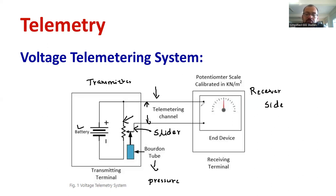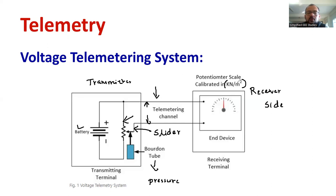What is available at the receiving end side? There is a calibrated device. The device is calibrated in the range of kilo Newton per meter square. The voltmeter is calibrated in terms of Pascal, where Pascal is the unit of pressure — kilo Newton per meter square.